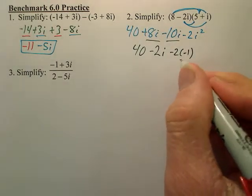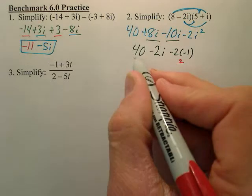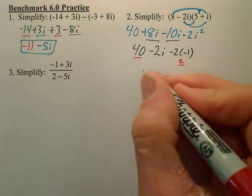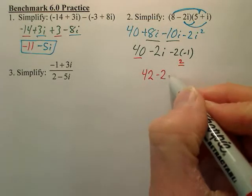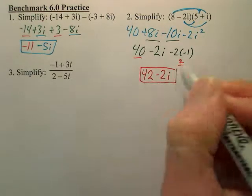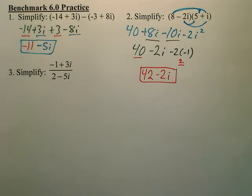Negative times a negative is positive, so that's a 2. 40 plus 2 is 42, minus 2i. When you multiply these two, that is my new imaginary.